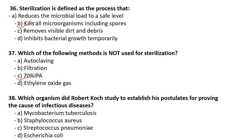Which organism did Robert Koch study to establish his postulates for proving the cause of infectious diseases? He studied Mycobacterium tuberculosis — M. tuberculosis. This is related to the germ theory that Robert Koch put forward.